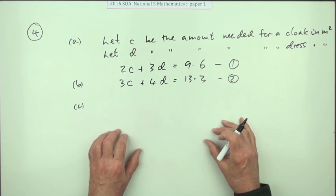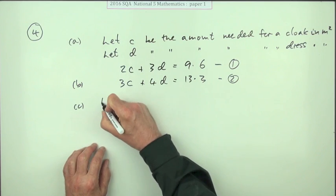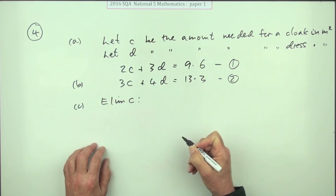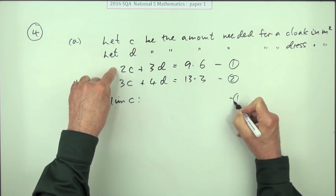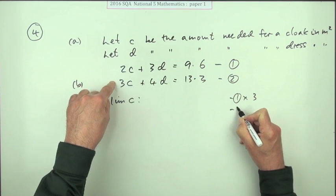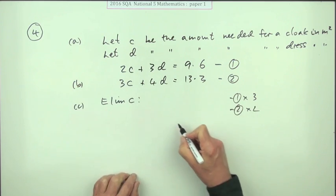Alright, what's the plan? Well, they've got the smaller numbers. My plan is this: I'm going to eliminate c, and I can achieve that by doing the first equation times three and the second equation times two.